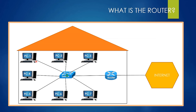If PC one wants to communicate with the router, it must send its packet to the switch first. Then the switch looks inside the packet, understands that the packet wants to go to the internet, and sends the packet to the router. The router looks inside the packet, understands that it wants to go to the internet, and sends the packet to the internet over this port — which is where the cable purchased from the ISP is plugged in.